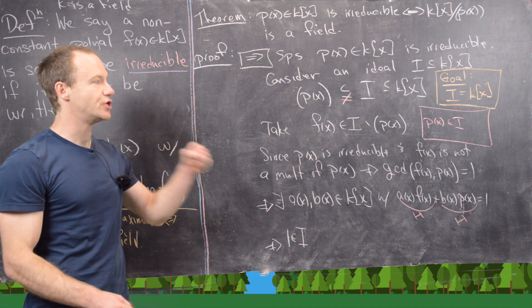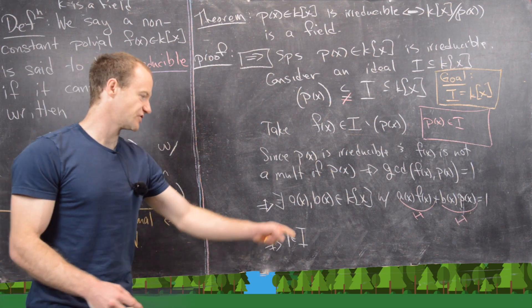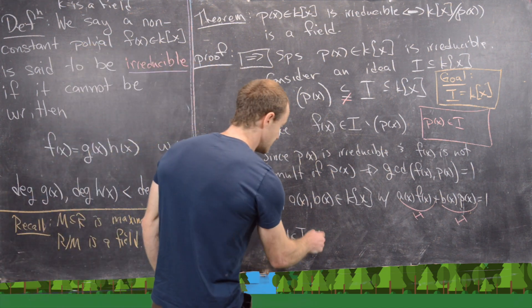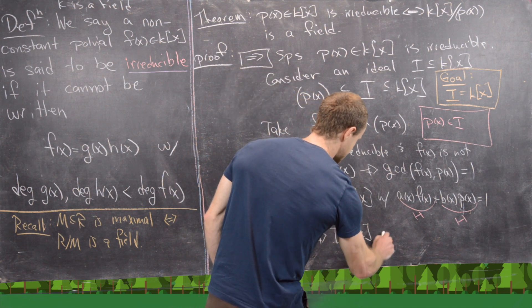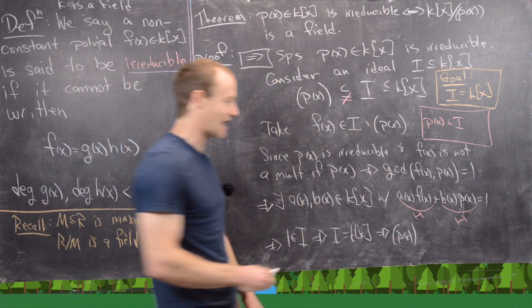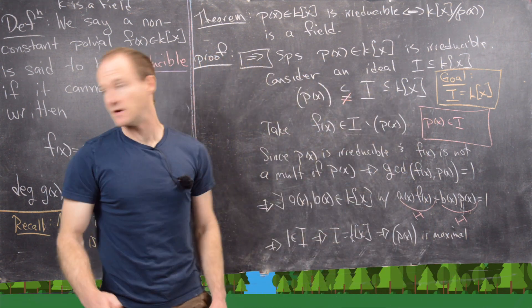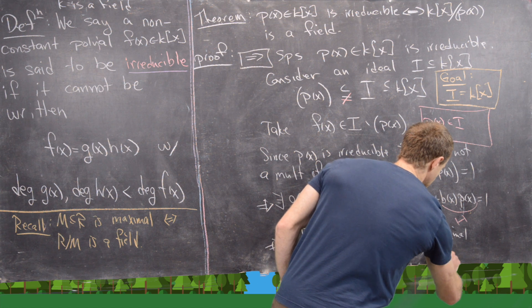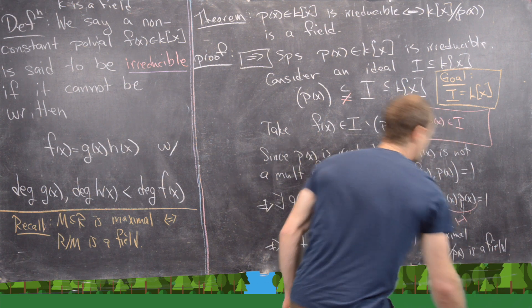Recall, if you have a unit inside of an ideal, then that ideal is the entire ring. We don't just have a unit inside the ideal — we have the easiest unit to work with, just the number 1. So the ideal I equals the entire ring k[x]. But that tells us our principal ideal (p(x)) is maximal. An ideal being maximal is equivalent to the quotient being a field, so k[x] mod (p(x)) is a field, which is what we wanted.